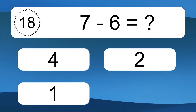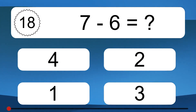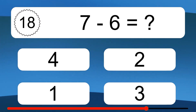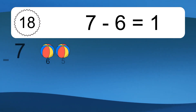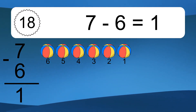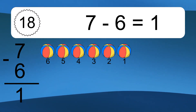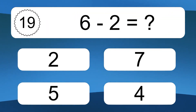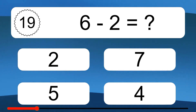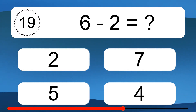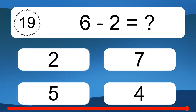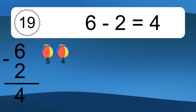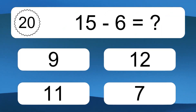7 minus 6 equals what? 7 minus 6 equals 1. Let's count it: 6, 5, 4, 3, 2, 1. 6 minus 2 equals what? 6 minus 2 equals 4. Let's count it: 5, 4.